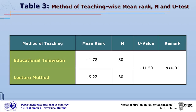Thus, the null hypothesis that there is no significant association between methods of teaching and achievement in science of students is rejected. Further, the mean rank score of achievement in science of the group taught through educational television is 41.78, which is significantly higher than those taught through the lecture method, whose mean rank of achievement in science is 19.22. It may therefore be said that educational television was found to be significantly more effective compared to the lecture method on the basis of achievement in science of students.